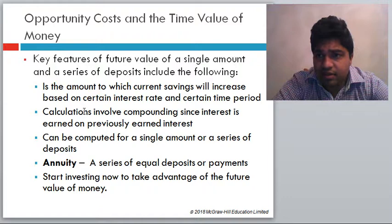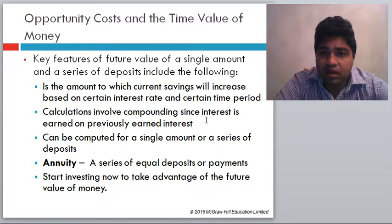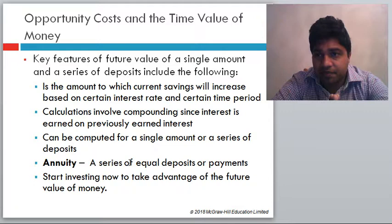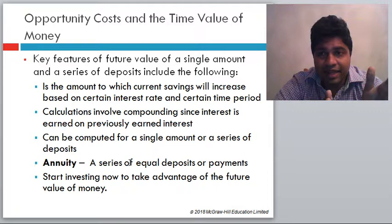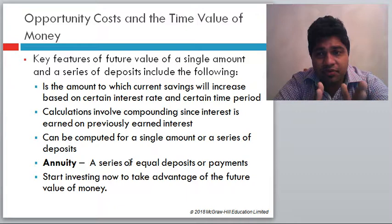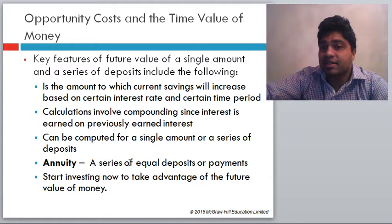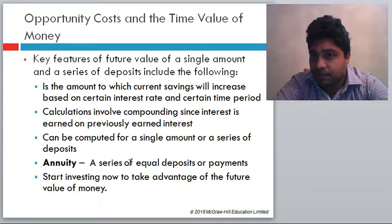Present value is the current value of a future amount based on a certain interest rate and time period. For example, if you need $50,000 in 5 years to buy a Tesla, and you can earn 5% in a mutual fund, present value tells you how much to invest today. On a timeline: going forward calculates future value; going backward calculates present value. Future value calculations are called compounding; present value calculations are called discounting. Present value can be computed for a single amount or a series of deposits.